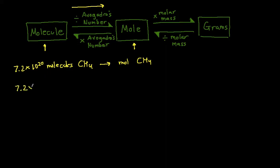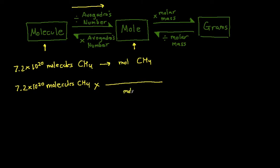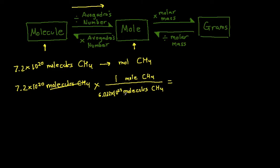Using dimensional analysis, we have 7.2 times 10 to the 20 molecules of CH₄. We multiply by a factor — it's all about canceling out units — so molecules of CH₄ goes on the bottom to cancel out, and moles of CH₄ goes on the top since that's where we're going. Avogadro's number, 6.022 times 10 to the 23, goes on the bottom, and we put 1 in front of moles. The molecules of CH₄ cancel, leaving us with 0.0012 moles of CH₄.